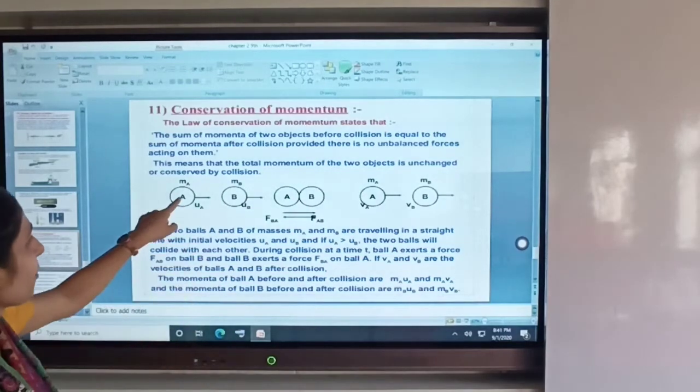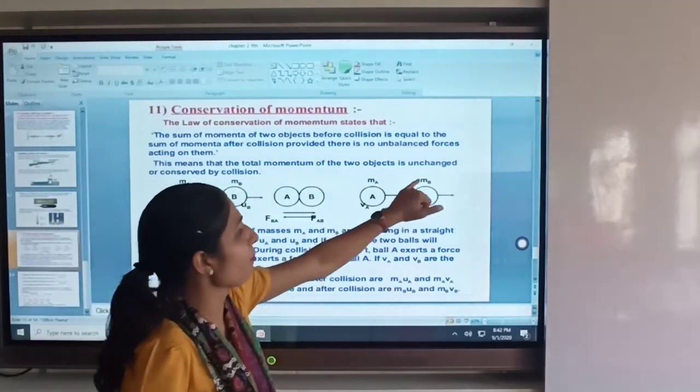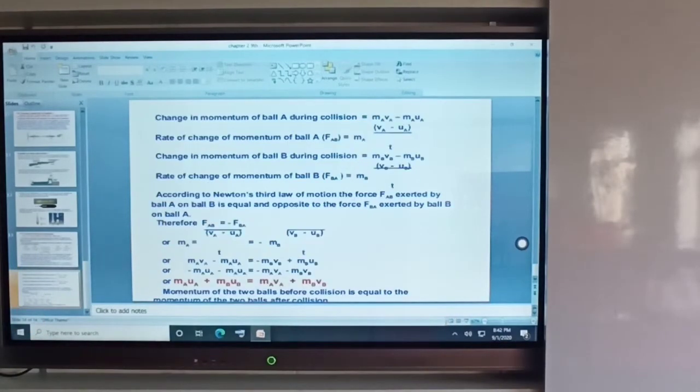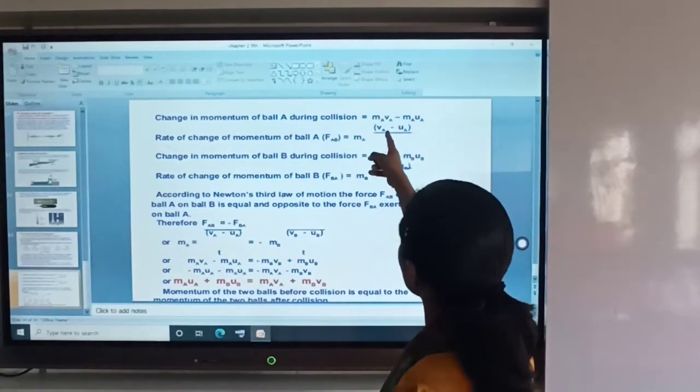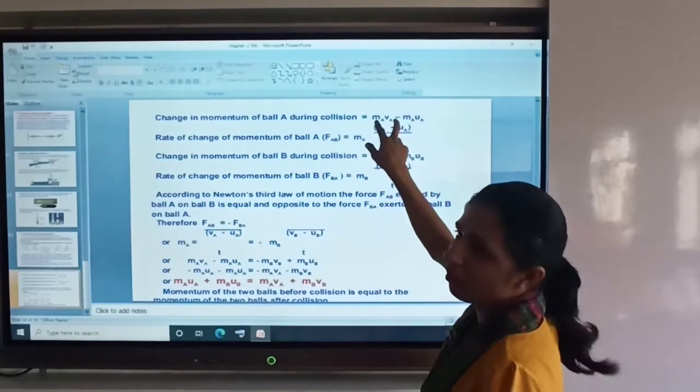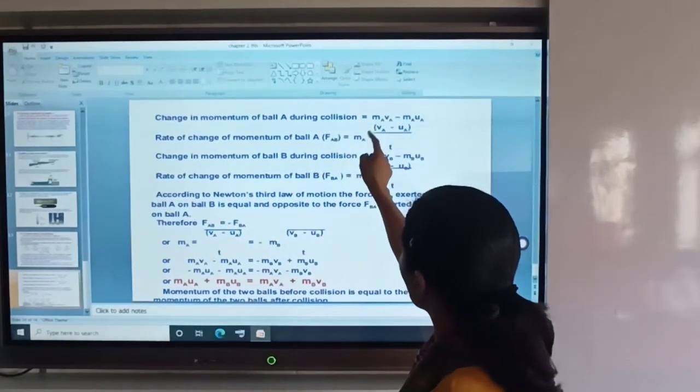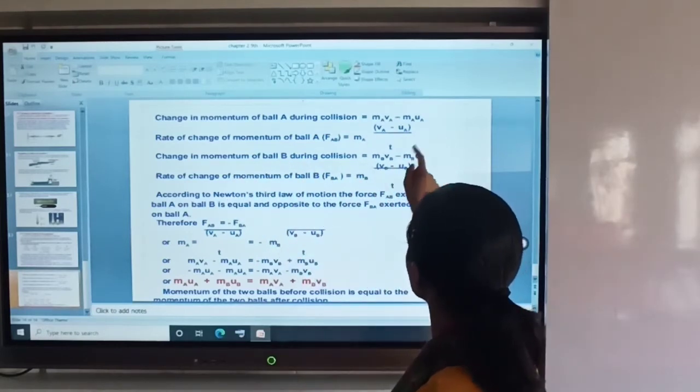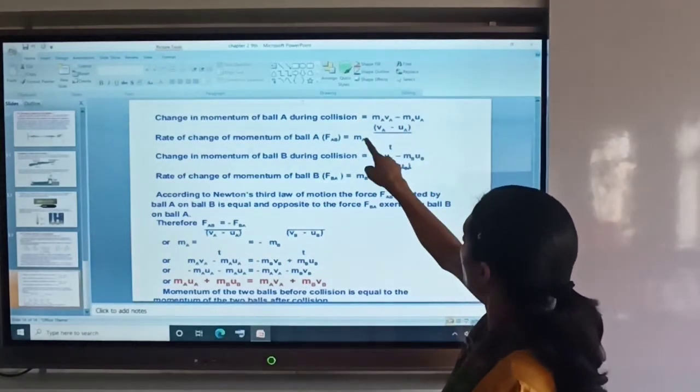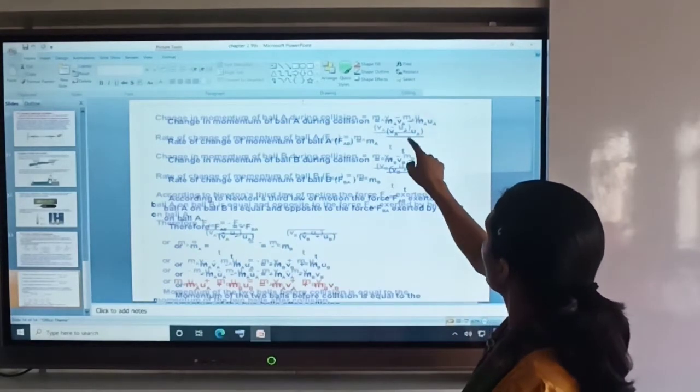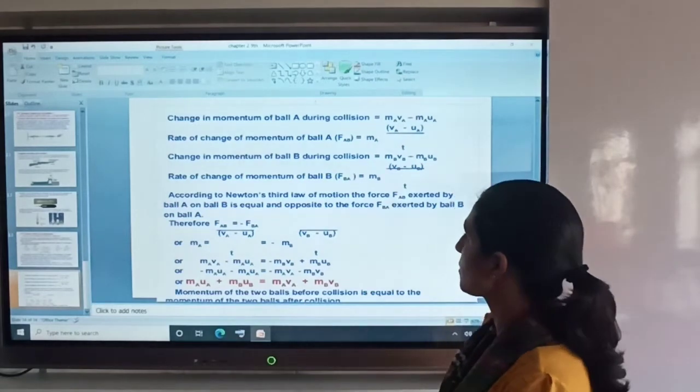Rate of change of momentum of ball A and ball B. Change of momentum divided by time. This is M_A times (V_A minus U_A) divided by T. Same for ball B, M_B times (V_B minus U_B) by T.